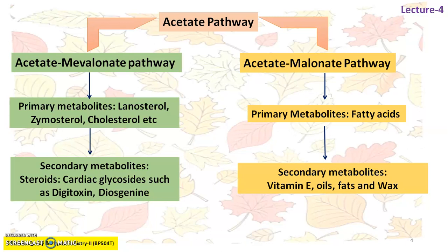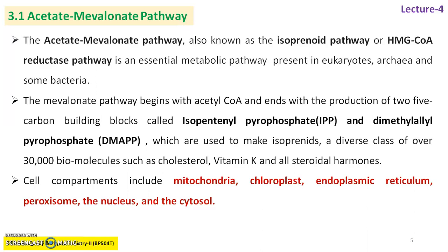We will study each pathway one by one. The acetate mevalonate pathway, also known as the isoprenoid pathway, forms isoprene molecules or isopentyl pyrophosphate as a primary metabolite intermediate, or the HMG-CoA reductase pathway. It is an essential metabolic pathway present in eukaryotes, archaea, as well as in some bacteria, because bacteria also require fatty acids for growth, development, and biosynthesis of the lipid layer or cell wall. The mevalonate pathway begins with acetyl-CoA.